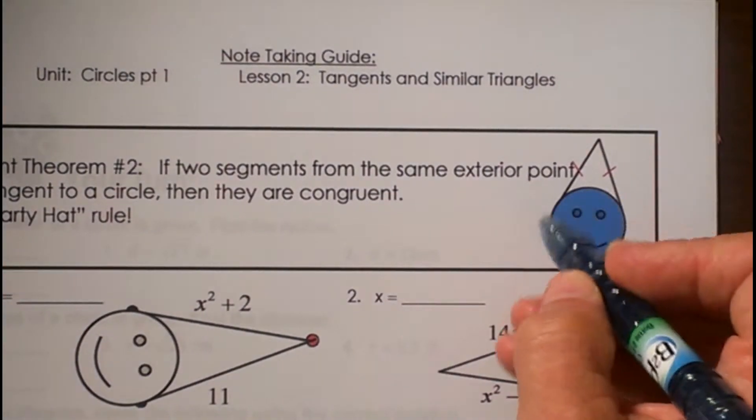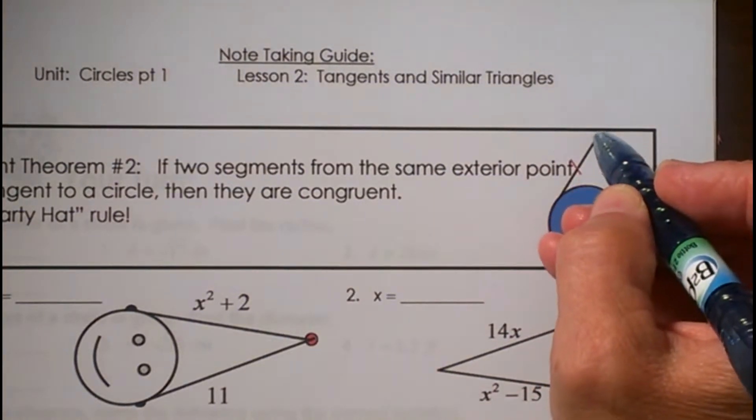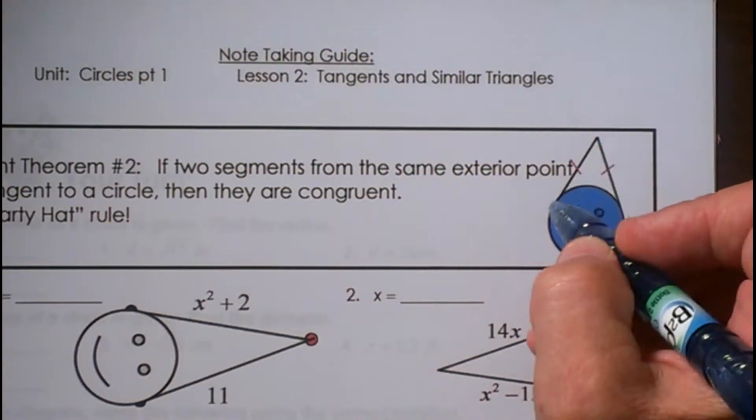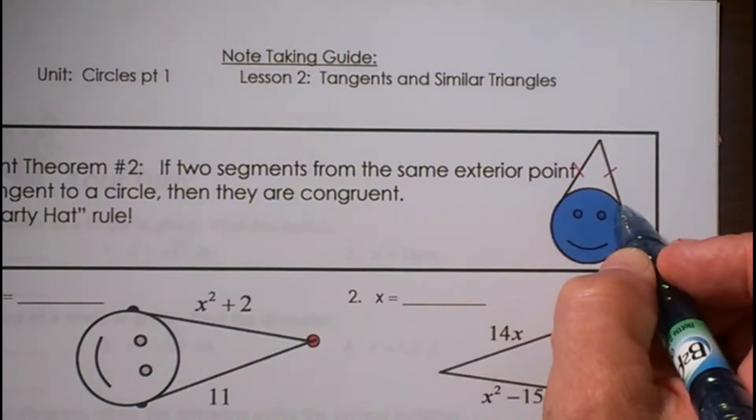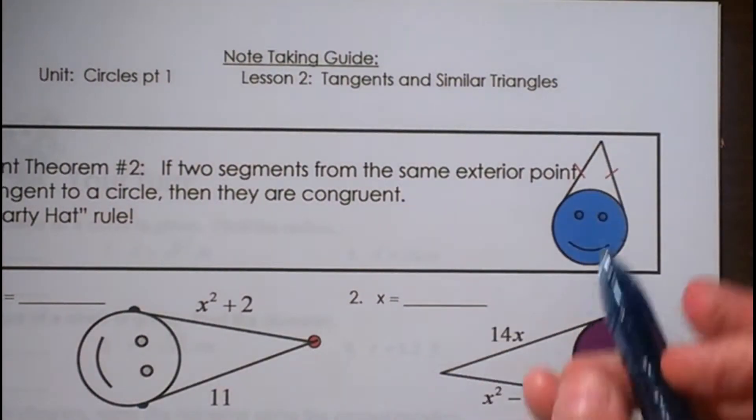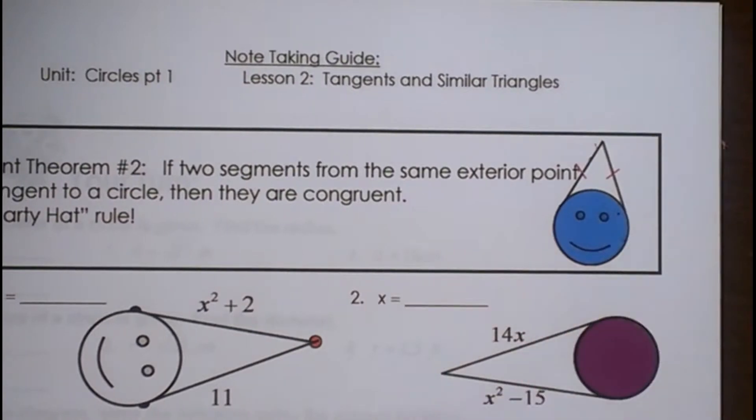We've got a circle here, and we've got a point on the outside, and we've got two segments drawn to the circle that are tangent, so they touch in one place. I call this the Party Hat Rule, which means that the two segments are congruent to each other.